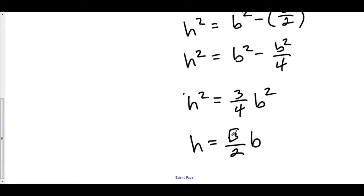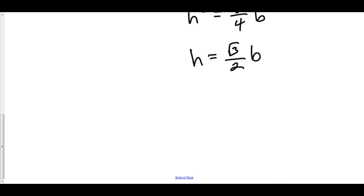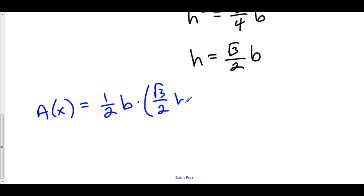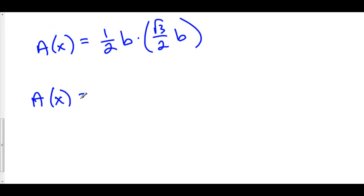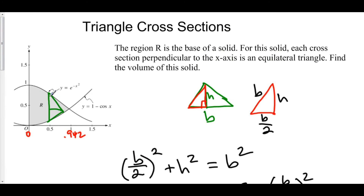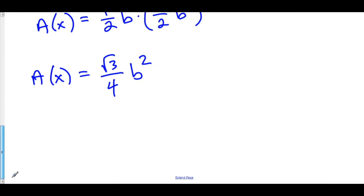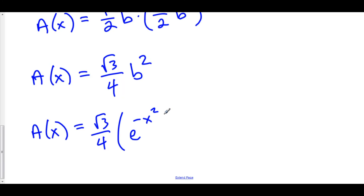So the height is √3/2 times the base. This means that the area of our triangles is equal to one-half base times height, and our height is √3/2 times the base. So the area is (√3/4) · b². Our base is our upper function minus our lower function — the upper function being e to the negative x squared, and the lower function being 1 minus cosine of x. So the area of each cross-section in terms of x is (√3/4) · (e^(−x²) − (1 − cos x))².